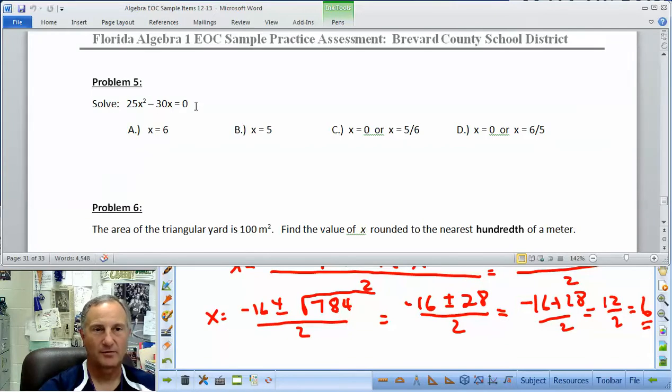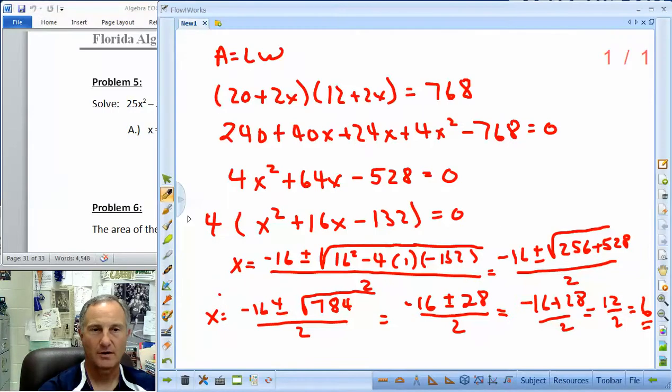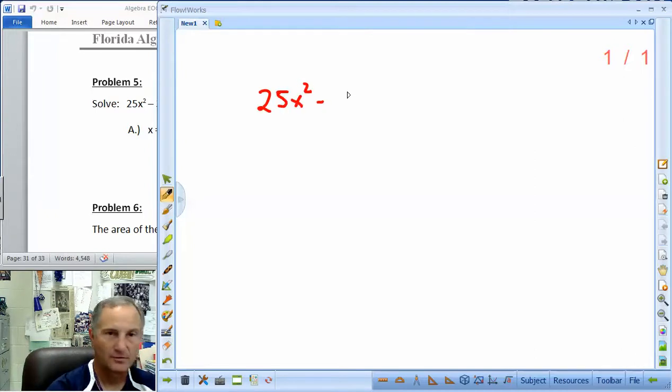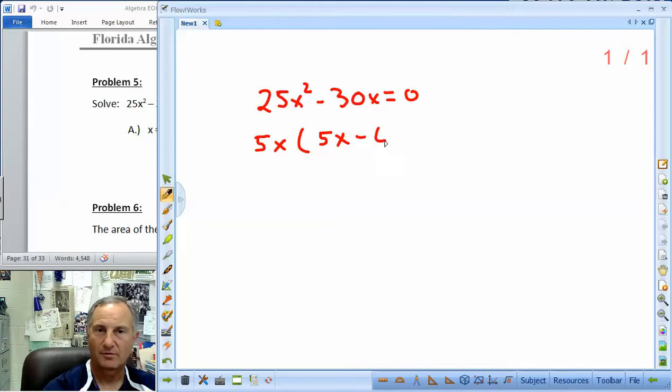Problem 5 solved. 25x squared minus 30x equal to 0. Here's another opportunity to do some factoring. But we're going to do a greatest common factor here. It's not a trinomial. So don't try to do all of this business. We're looking at 25x squared minus 30x equal to 0. And they want us to solve this. So we're solving for x. So a greatest common factor here would be 5x. 5 goes into both of those. And there's an x. 5 times 5 is 25. We need another x though. There's my 25x. 5 goes into 30 six times. The x cancel. So I get that.